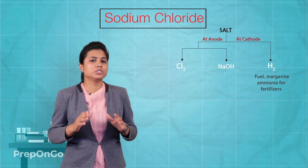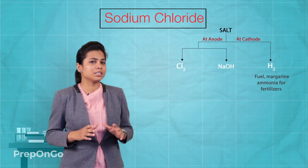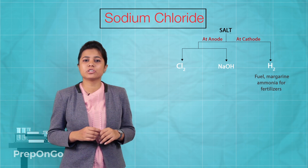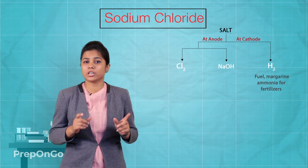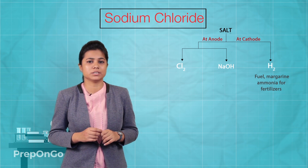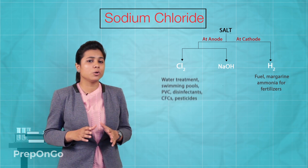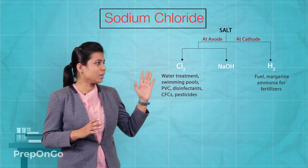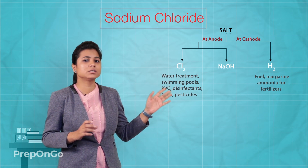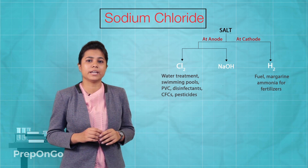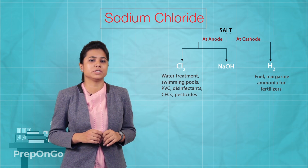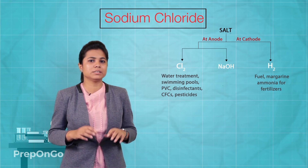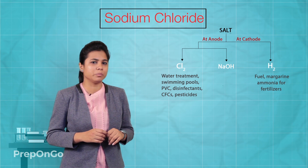Hydrogen is used as margarine, fuel, and in the manufacture of ammonia, which is an essential component for fertilizers. Chlorine is used in making disinfectants, insecticides, and CFCs. It is also used in water treatment plants and for cleaning swimming pools.